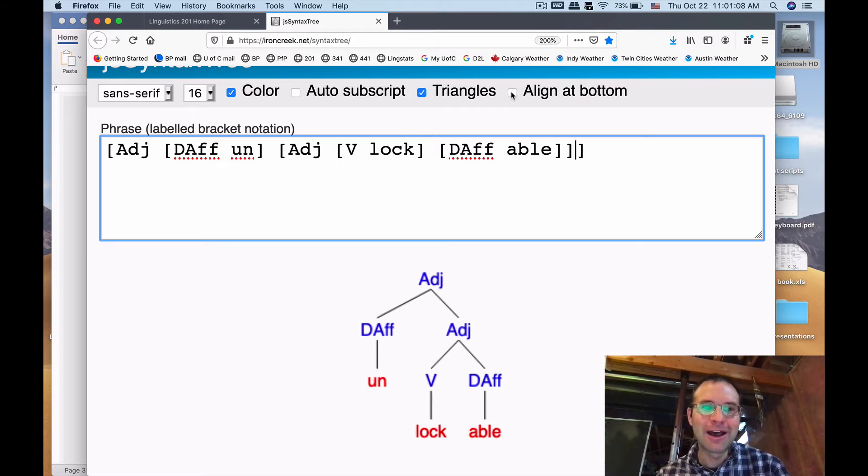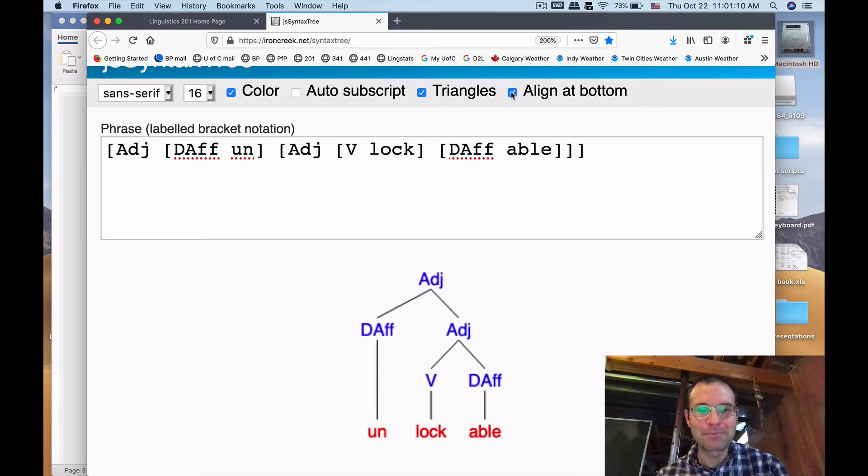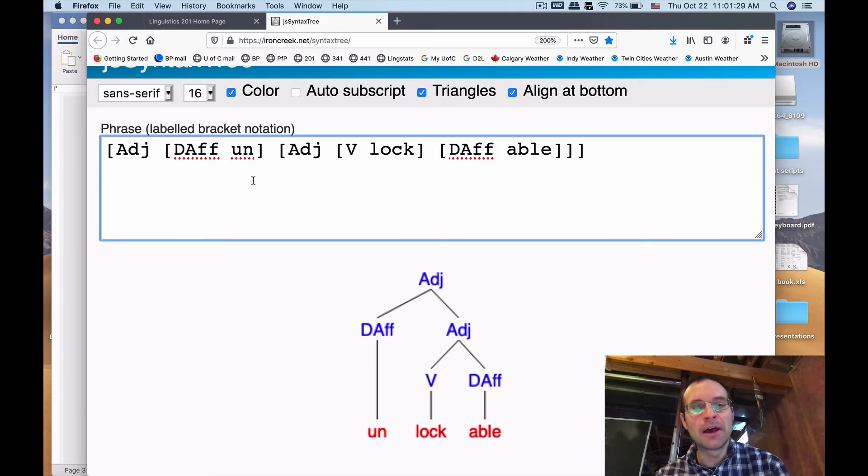I pointed out there's a little switch here for aligning at the bottom. I think that makes it look a little bit neater, so you can use that if you want. You can have color, whether or not you decide for yourself, I don't really care. But that's the default. Let's switch this around just so you see how easy this is. Remember unlockable is an ambiguous term. The first interpretation which we diagrammed here is that this is something which is not lockable.